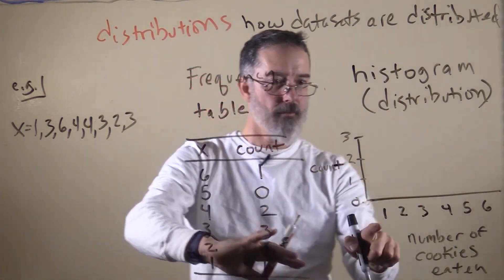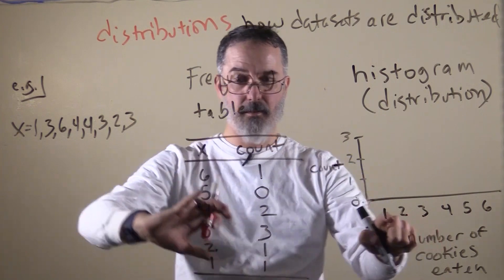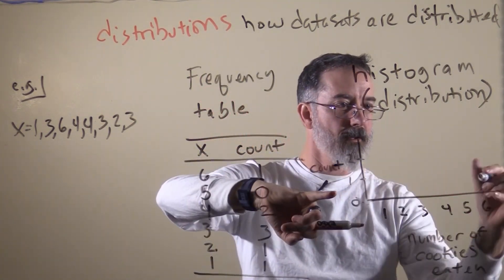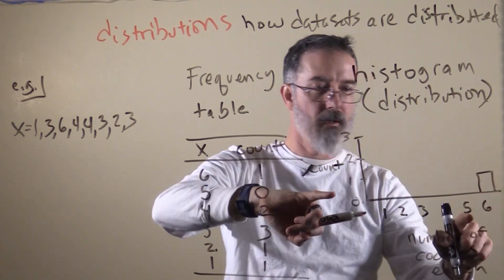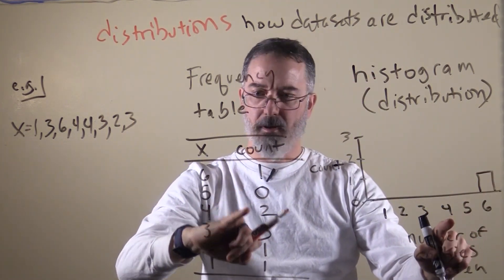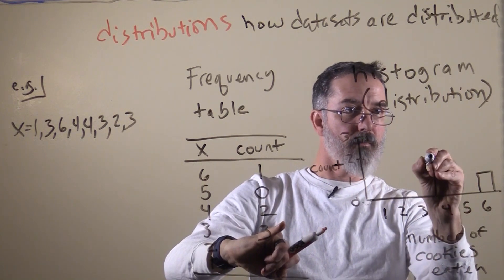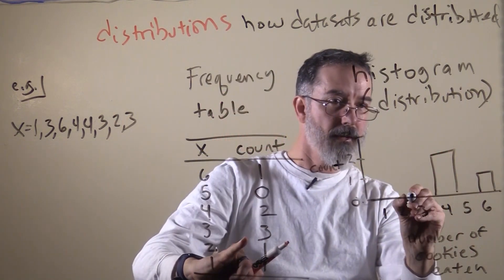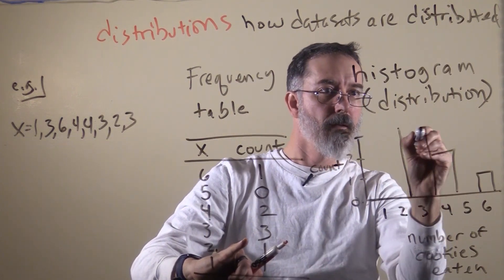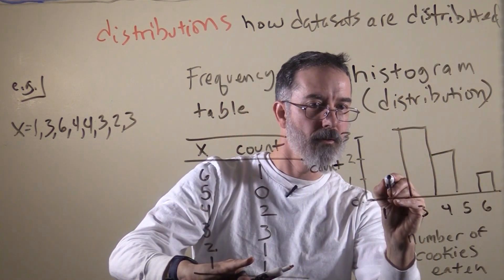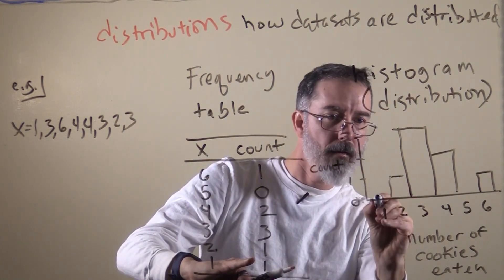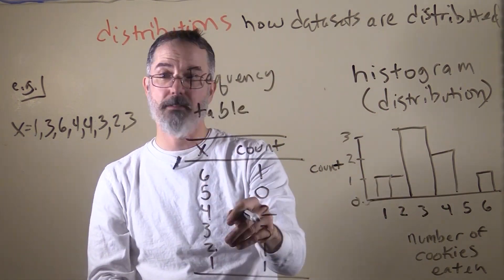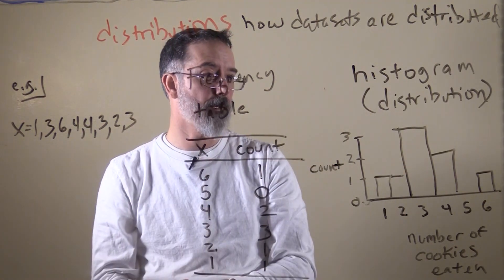So next we will want to create bars that correspond to the height of each of these values. So for 6 it only goes up to 1. There was 0, 5, so we don't need a bar. For 4 there is 2. That looks like about 2. There was 3 threes, and 1 two, and 1 one. That is the histogram for this frequency table, or this data set.